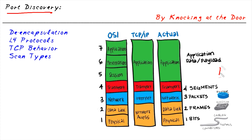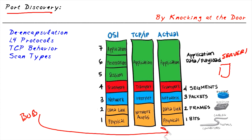If we have a server — let's call it Server 1 — and then we have Bob, who's sending a packet over to that server, when that packet shows up at Server 1, it's addressed at Layer 2 to the Ethernet address of the network card of that server. The server is going to de-encapsulate that information and pass it up.